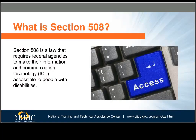What is Section 508? Section 508 requires that any information and communications technology the federal government creates, buys, maintains, or uses must be accessible for everyone, including people with disabilities. Besides making ICT accessible for disabled federal government employees, the law also includes members of the general public who are disabled.